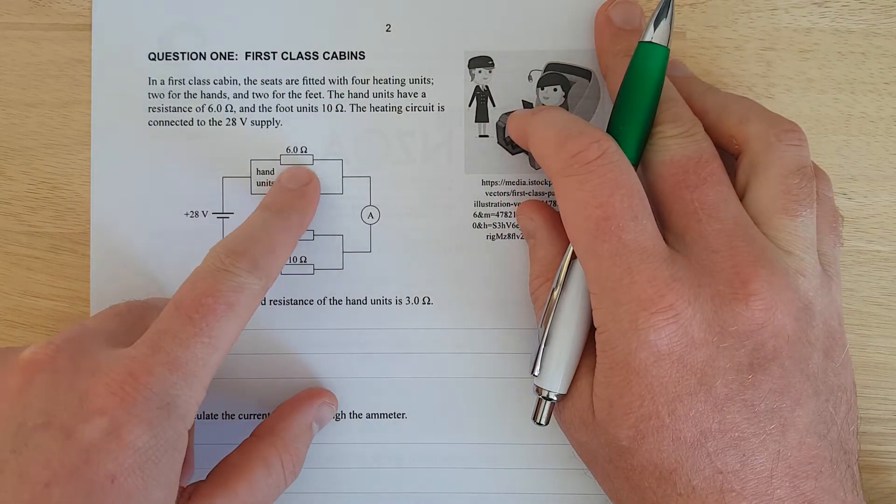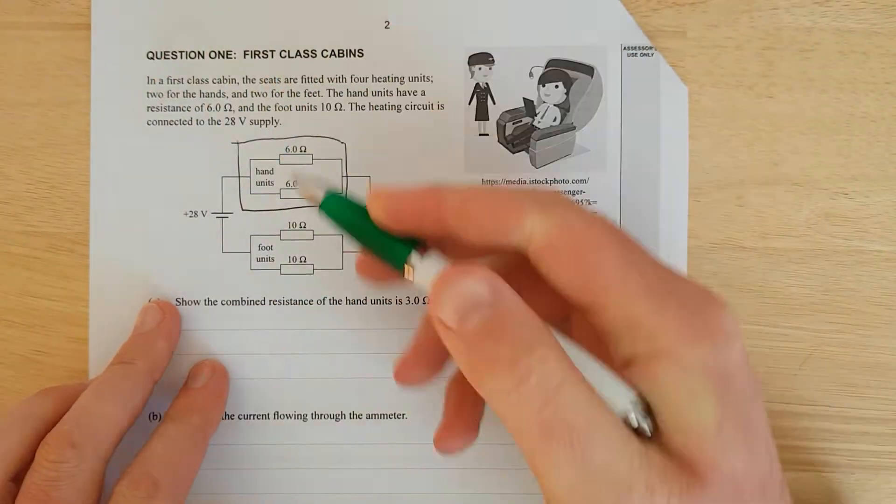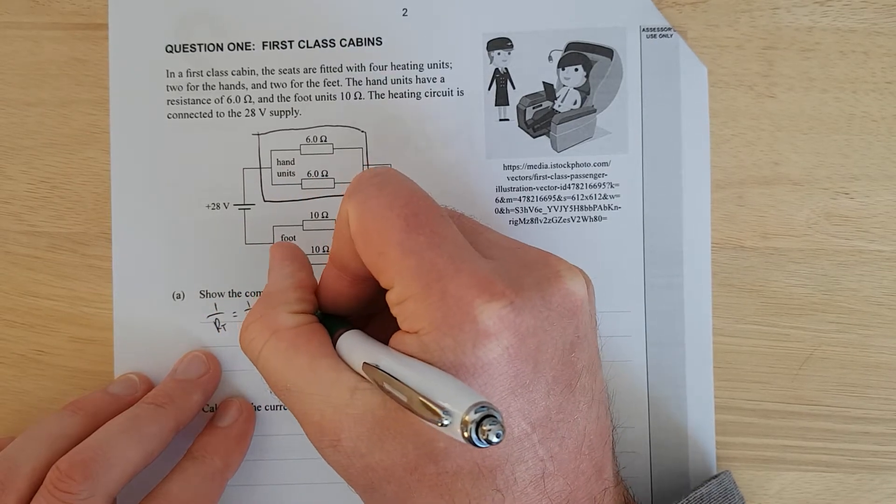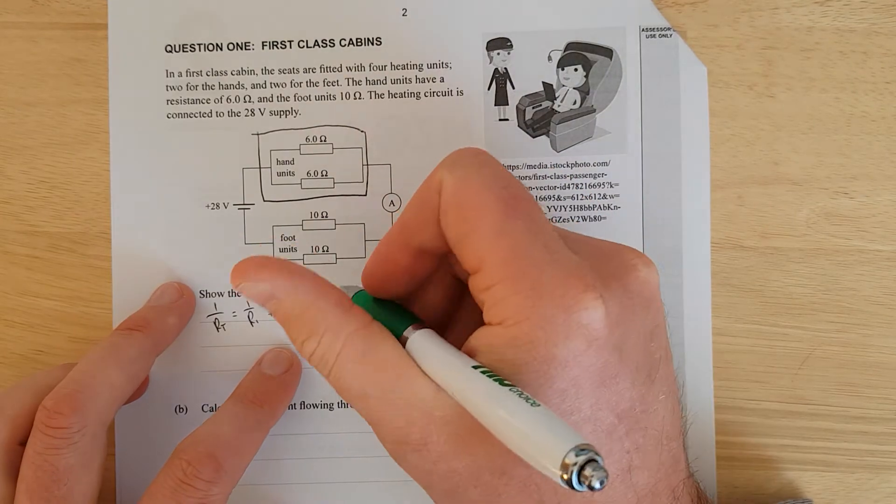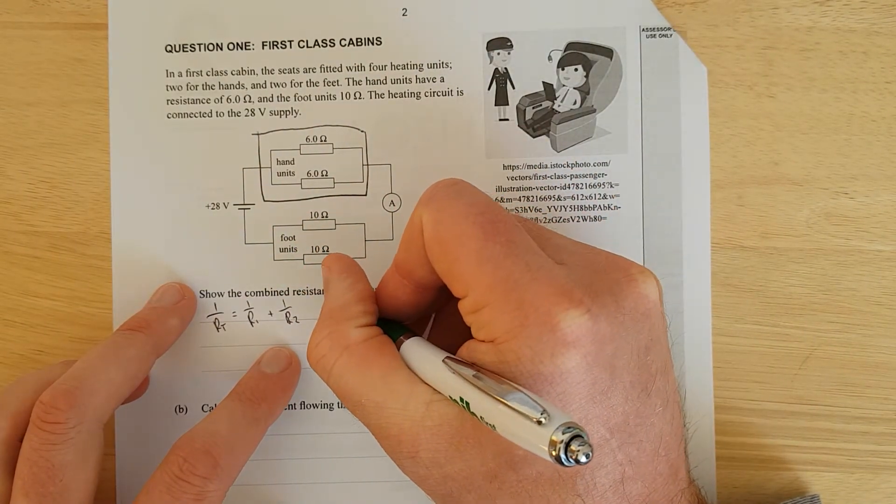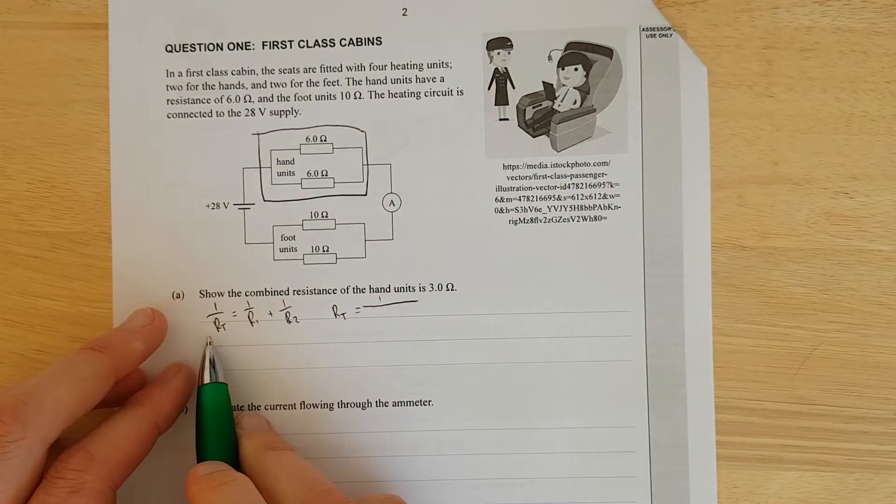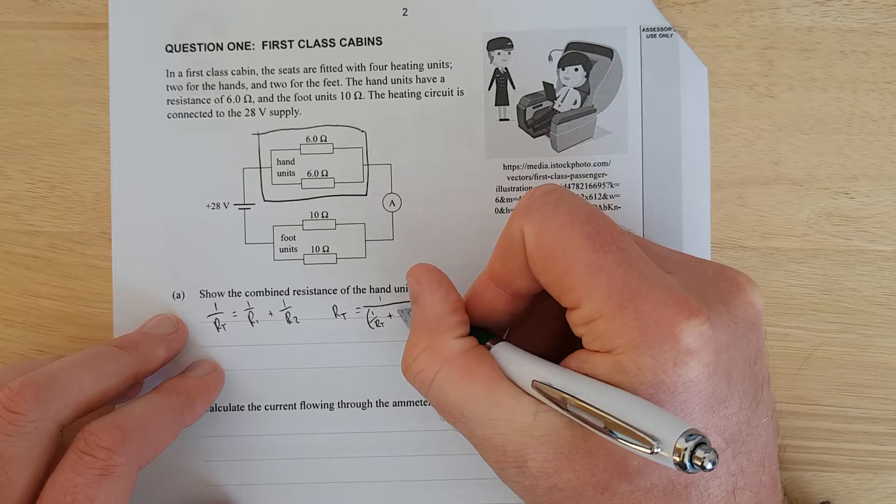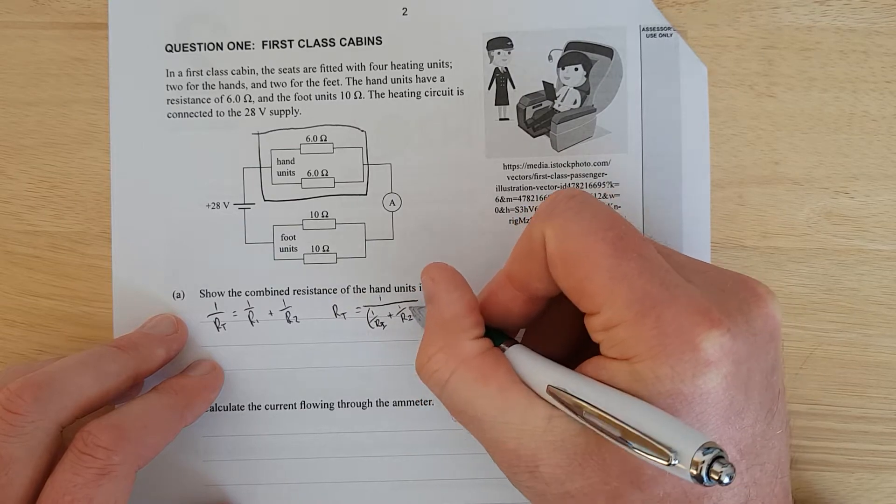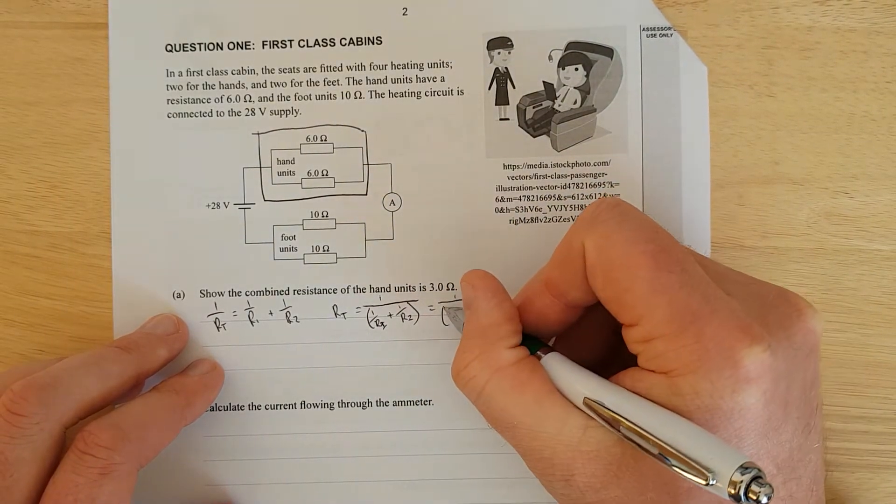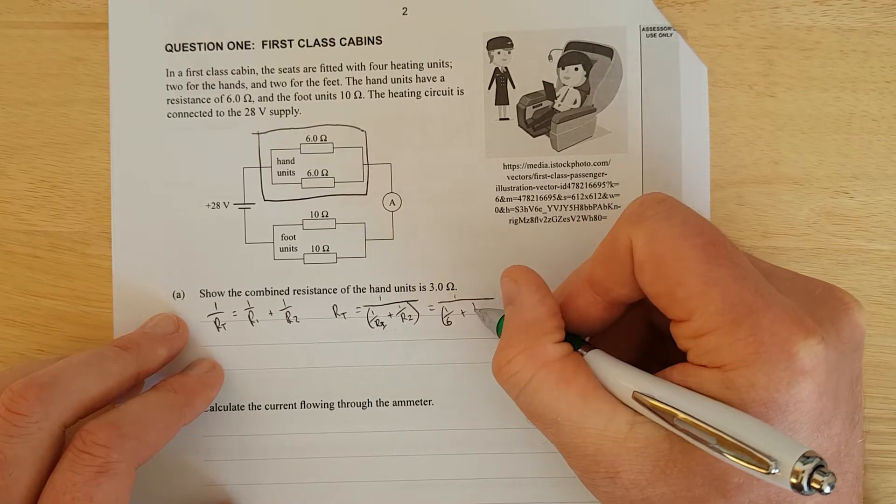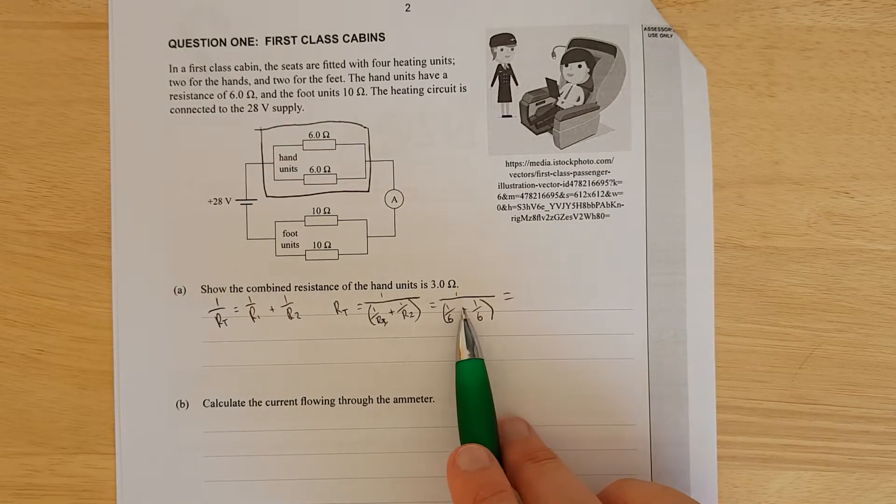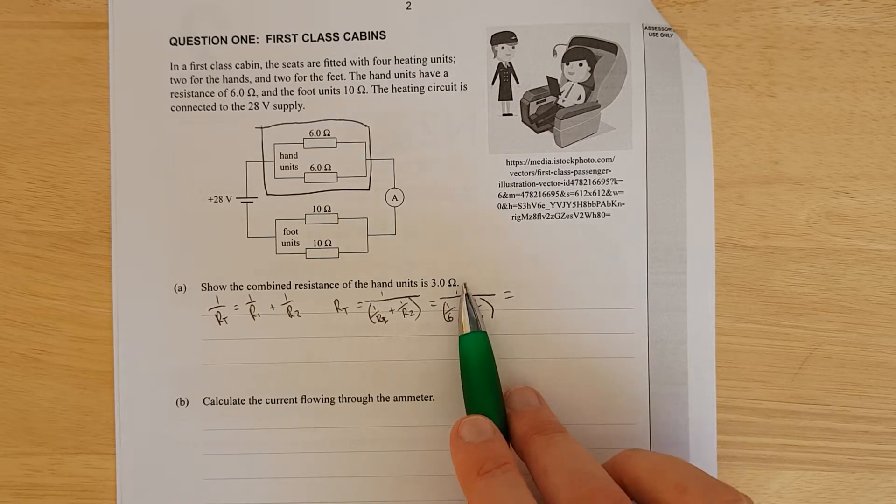Show the combined resistance of the hand units is 3 ohms. So these are the hand units. They are in parallel because the current splits. So we have 1 over R_total equals 1 over R1 plus 1 over R2. Because it's a show question, we're going to show that R_total is equal to 1 divided by (1 over R1 plus 1 over R2). That equals 1 divided by 1 over 6 plus 1 over 6, which equals 1 over 3, and then you flip to get 3 over 1.